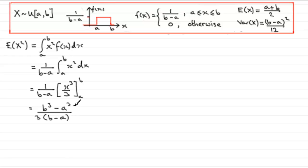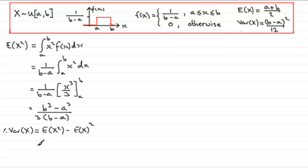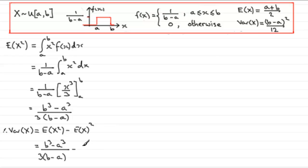So that's E of x squared. Now the variance of x is equal to E of x squared minus E of x all squared. E of x squared is b cubed minus a cubed all divided by 3 times b minus a. Then we subtract E of x all squared — the expected mean is a plus b over 2, so squaring gives a plus b all squared over 4.